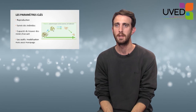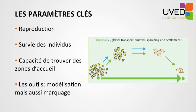Key parameters regarding dispersion include not only transportation, but also survival and reproduction. We need to see when reproduction takes place, how many events occur during the laying season, and individual survival during larval transport — whether conditions are favorable for larval survival. We also consider the capacity for larvae to find new habitats; if currents take them away from the coast and never return them, it's difficult for larvae to settle and grow. Sometimes, conversely, currents help larvae become juveniles and adults.